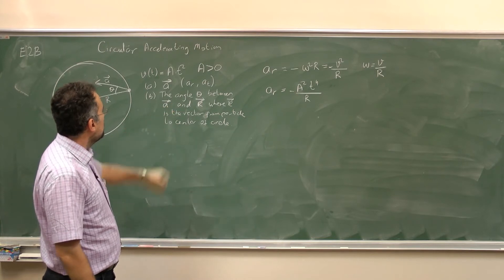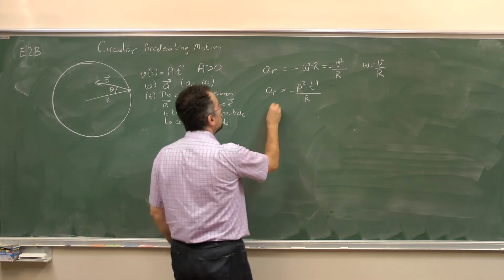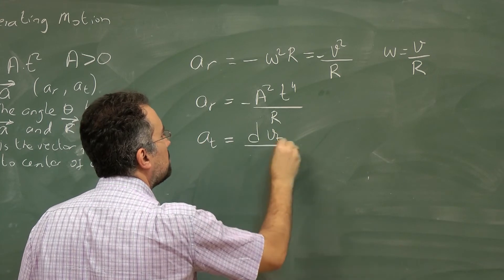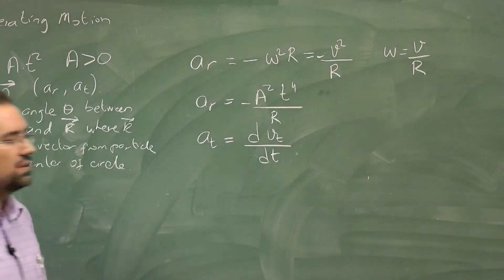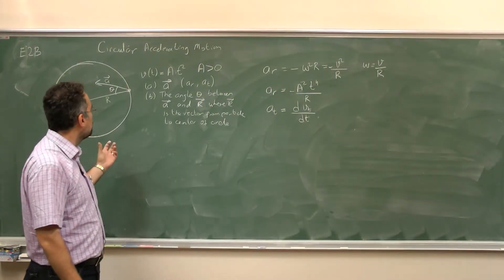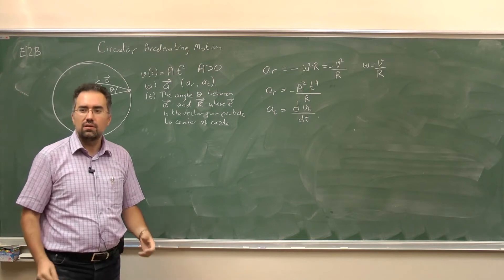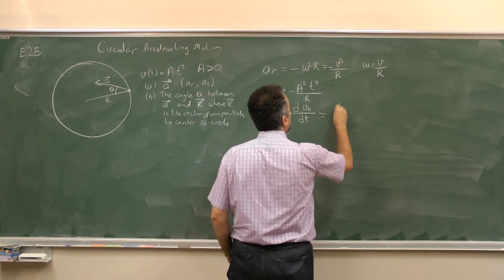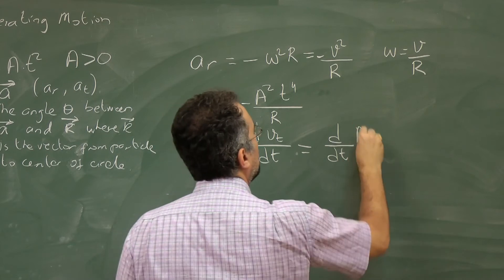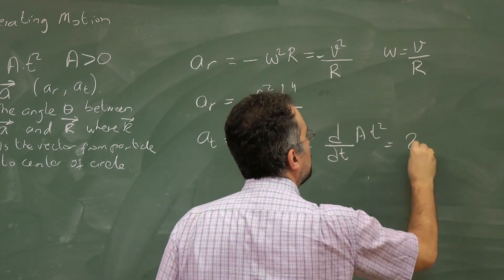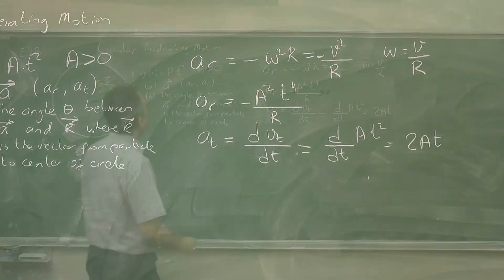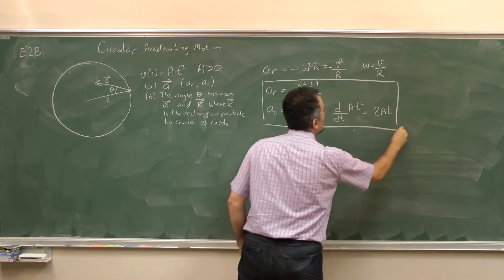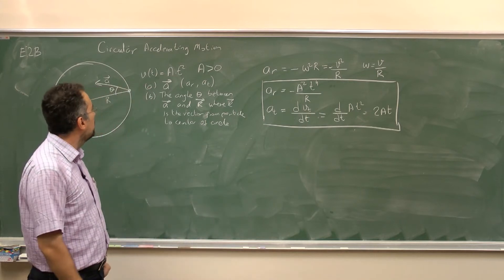The tangential component of the acceleration equals the time derivative of the tangential speed. Since the particle is already moving in a circular path, its tangential speed is just its speed. So we take d/dt of a t squared, which gives 2at. These two results together give the answer to Part A.